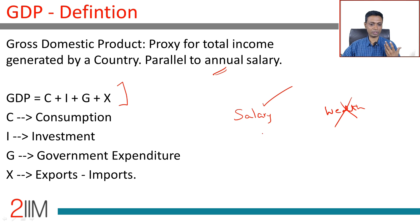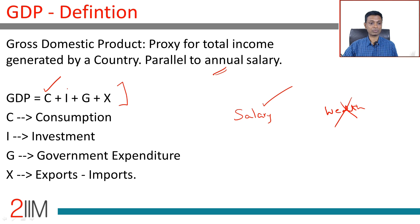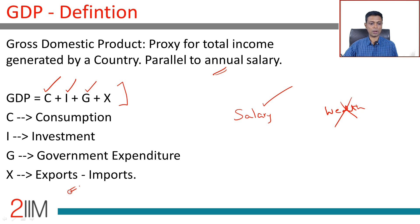What goes inside this? There are four components. Consumption — C. Investment — I. Government expenditure — G. And X — net exports, which is exports minus imports.